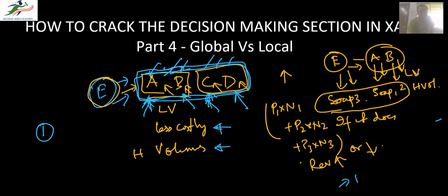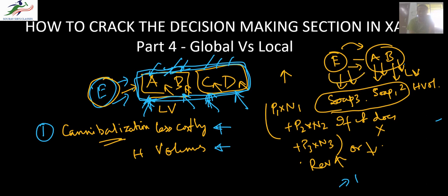This is the first decision point, called cannibalization — which means that one product is eating up the sales of another product. If this is not the case and product E is not related to any of the existing products — for example, A and B are two types of soaps and product E is a cosmetic item — then they are not related.